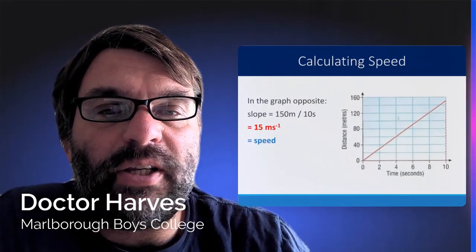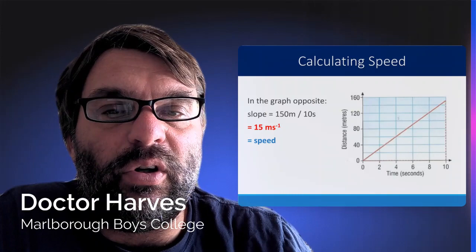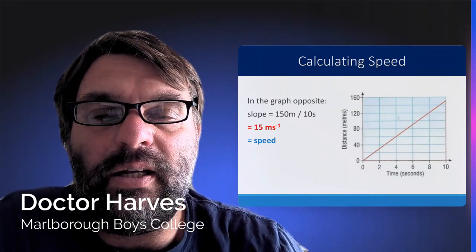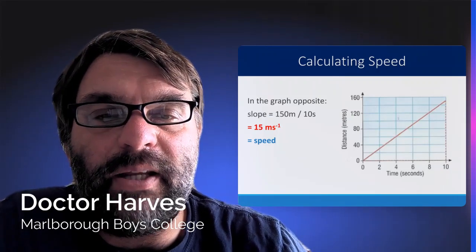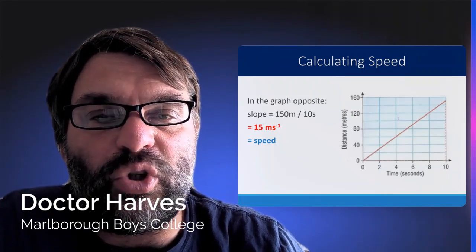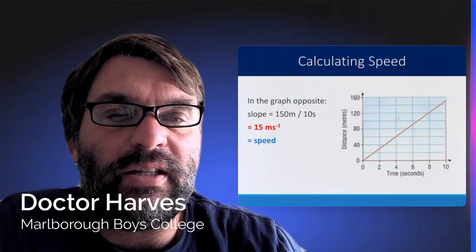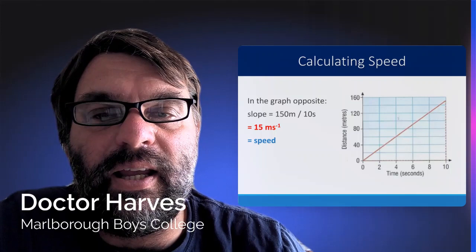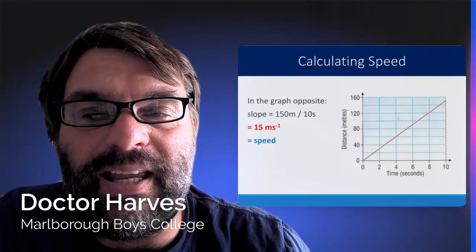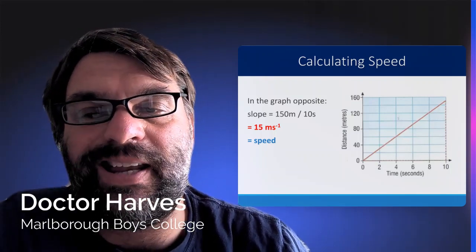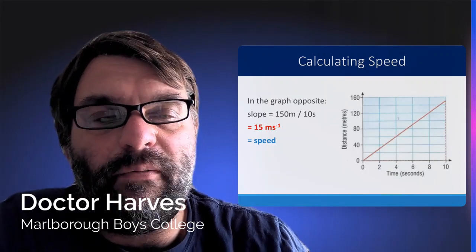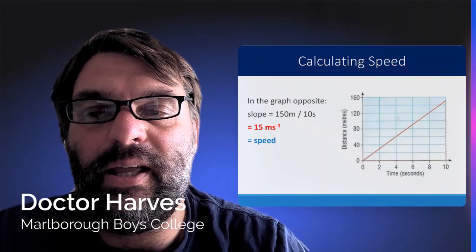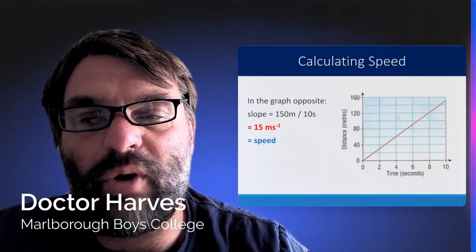So in the graph opposite, you've basically traveled 150 meters in 10 seconds. So the gradient is going to be 150 meters, the change in the y-value or change in distance, divided by the change in the x-value or 10 seconds. So 150 divided by 10 gives 15 meters per second, which is the speed of that object. It's traveling at a constant speed of 15 meters per second. So you have to be able to calculate that from a graph as part of the course.